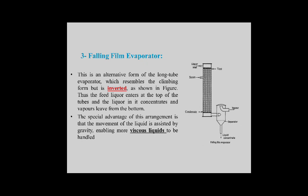Number three: the falling film evaporator. It is like the climbing film evaporator but the cyclone separator is at the bottom — it is an inverted form of the climbing film evaporator. It is used for viscous liquids.